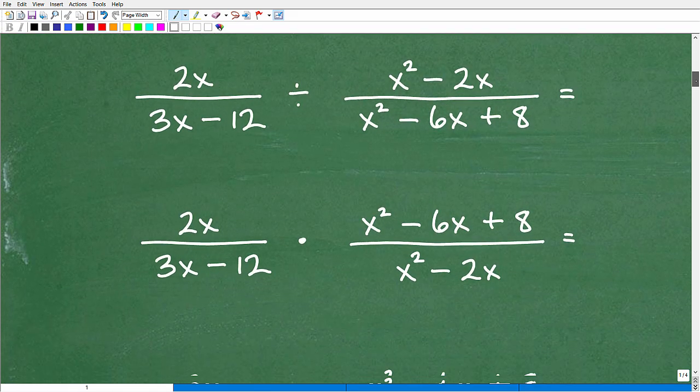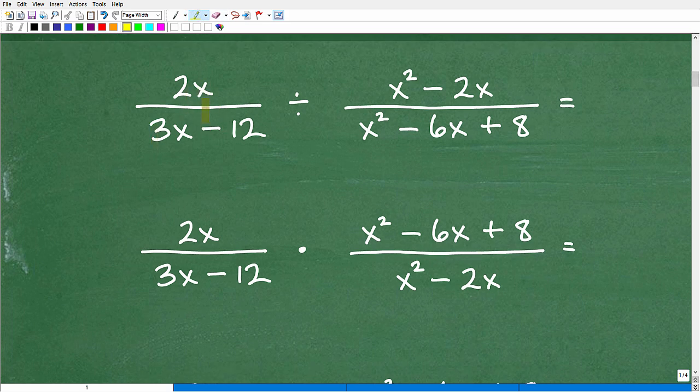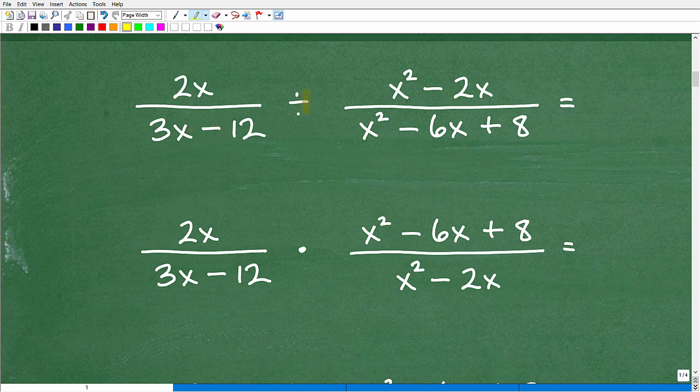So let's get to the solution now. We have 2x over 3x minus 12 divided by x squared minus 2x over x squared minus 6x plus 8. Now, I will say there's a couple different paths you can take to get to the same destination. So in math, you can start here and end here, and you can go this way or this way. So if your steps are a little bit different, it's okay as long as you end up at the final destination, which is the right answer.